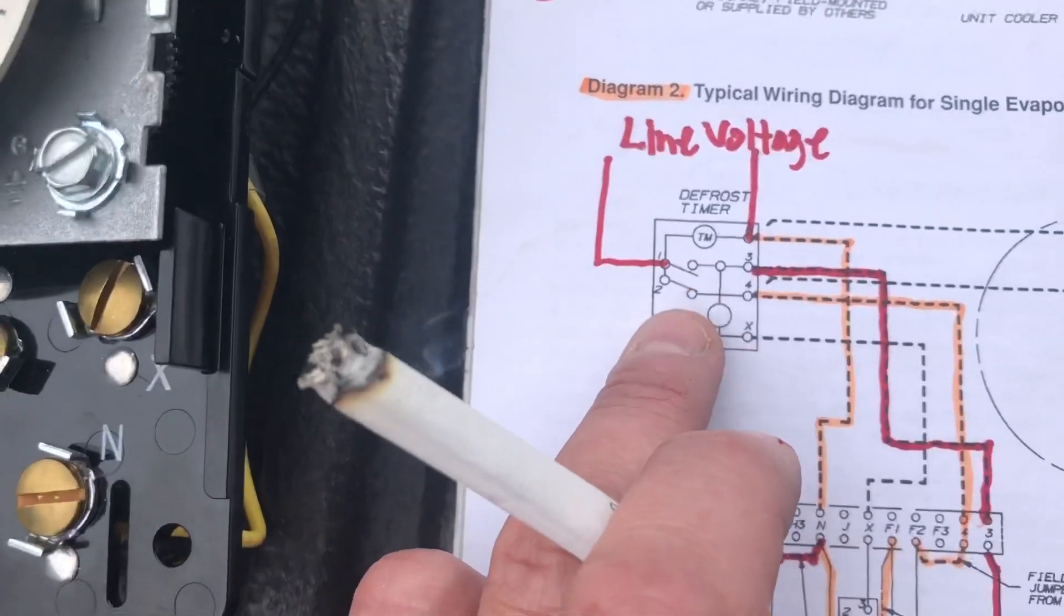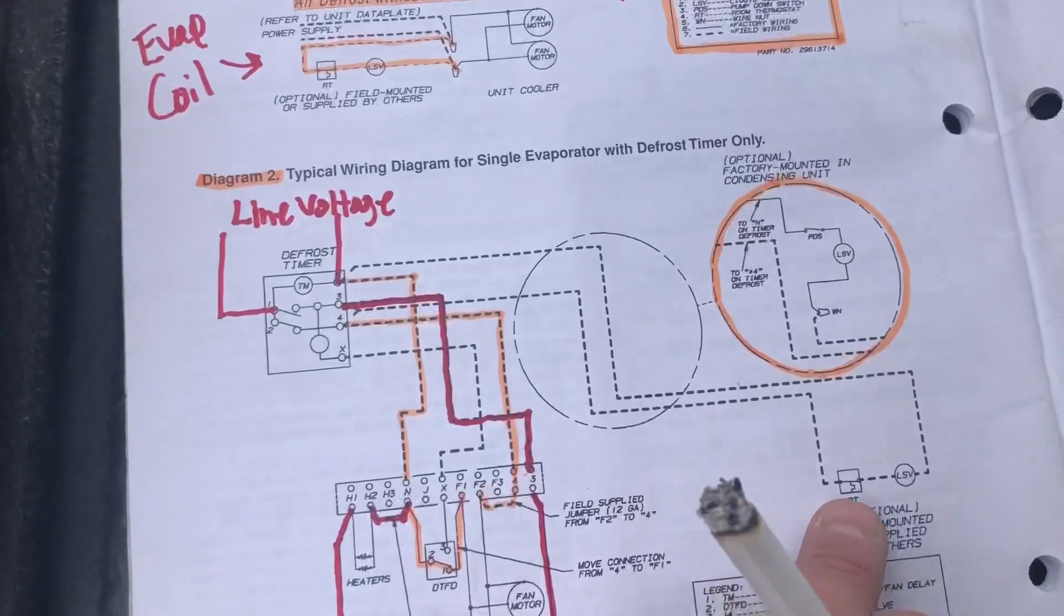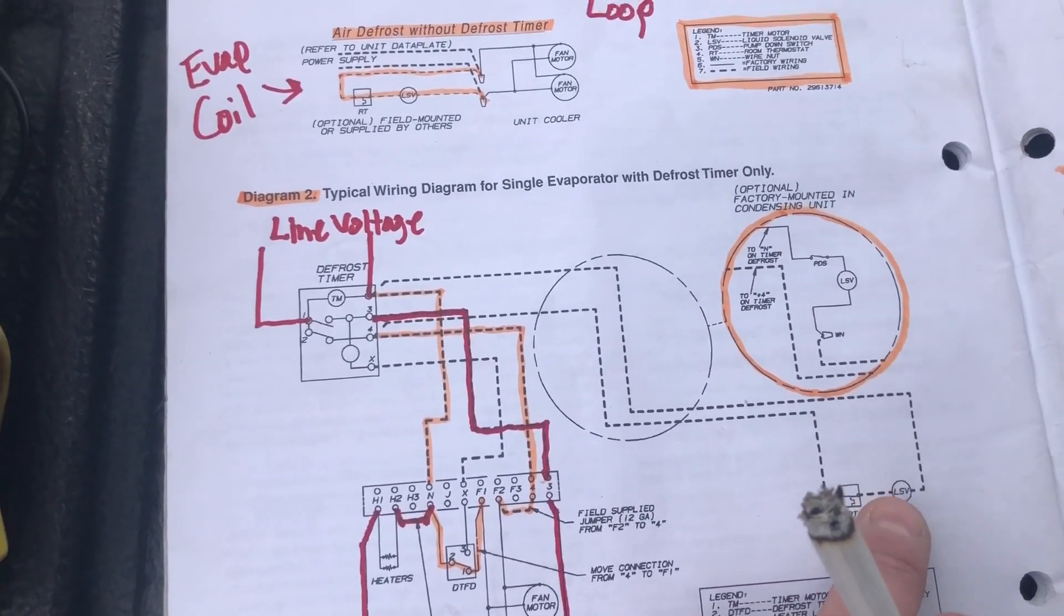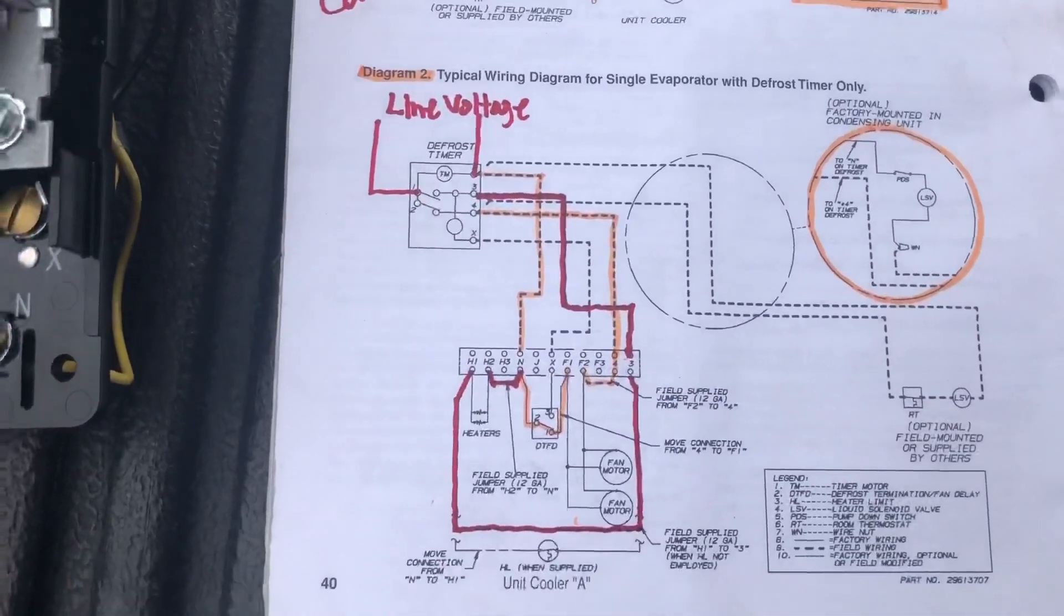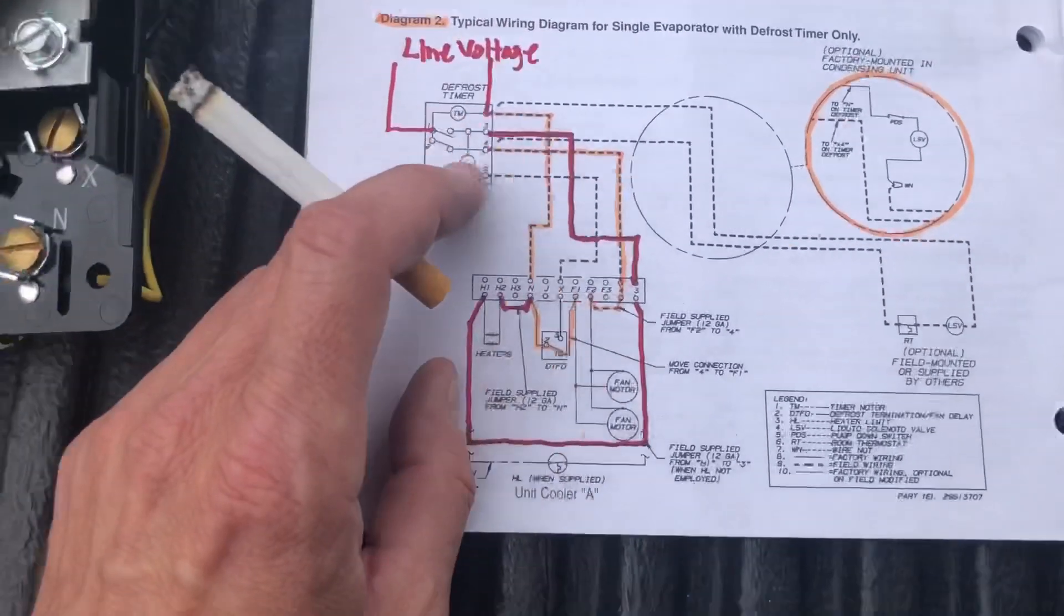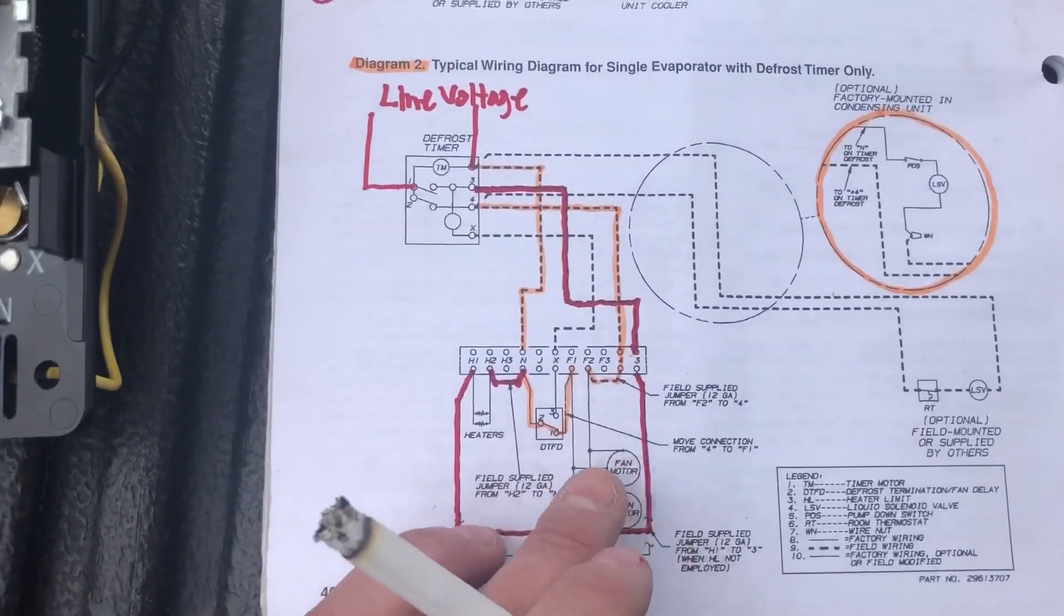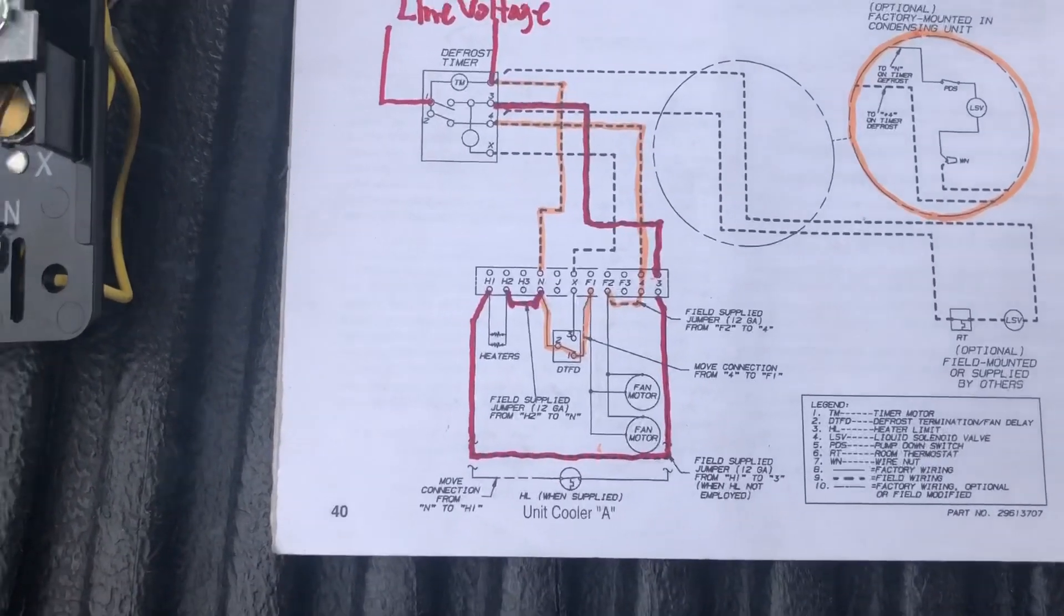I also want to mention in the defrost cycle, because we stopped bringing power to 4, you can also see it goes over to our control loop, that opens up the power for your thermostat and your solenoid. So the solenoid shuts down, pumps your system down, gets all your refrigerant back into your receiver. And then the heaters will power, your fans will shut off on your coil so the heaters can run.